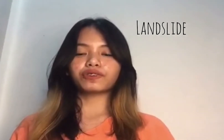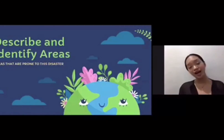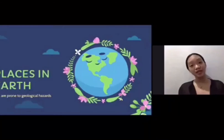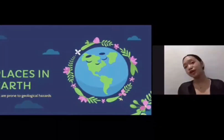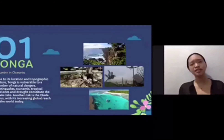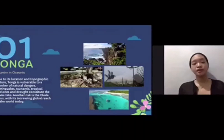I'm giving the floor to Francil Torejas. Thank you, Empress. I'm Francil Torejas, and today we're going to talk about how to describe and identify areas that are prone to geological hazards. Based on our research, these are some places on Earth that are prone to these disasters. The first one is Tonga. Tonga is a country in Oceania and is prone to geological hazards due to its location and topographic nature, making it vulnerable to a number of natural disasters.